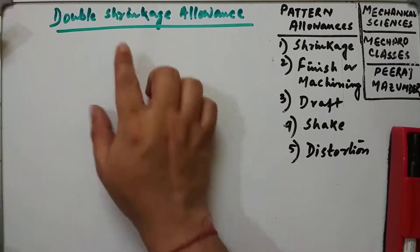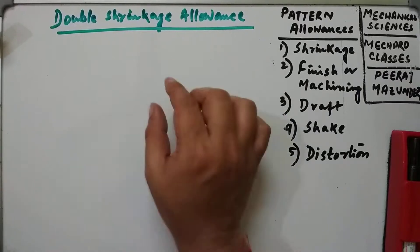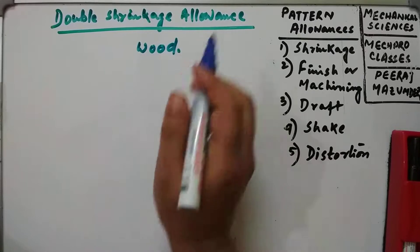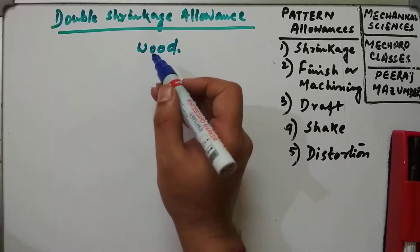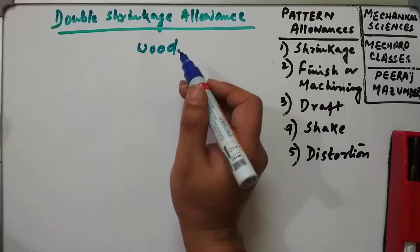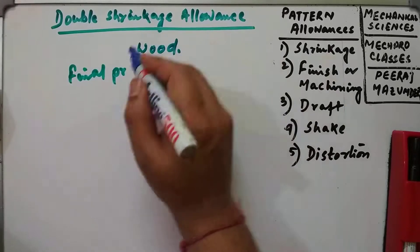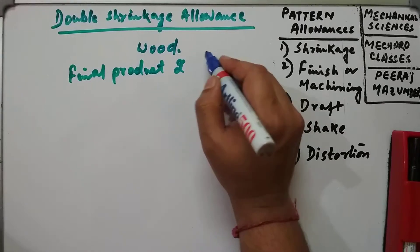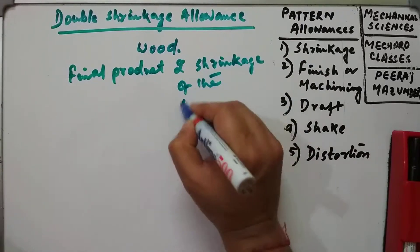One very important concept is the double shrinkage allowance. A double shrinkage allowance is provided for the dimensions of a pattern that is used to make a metal pattern. It takes care of the shrinkage of the final product and also the shrinkage of the pattern material itself.